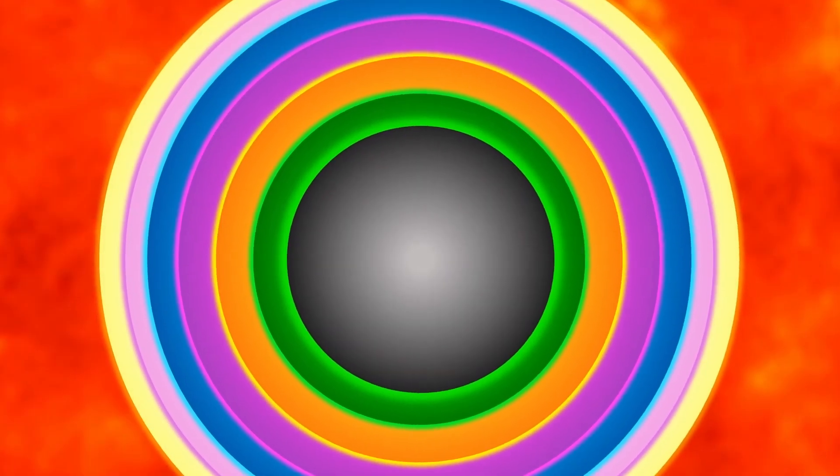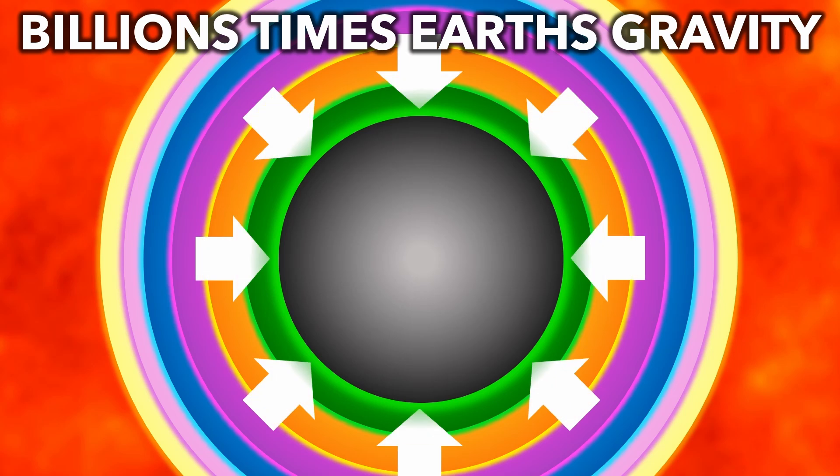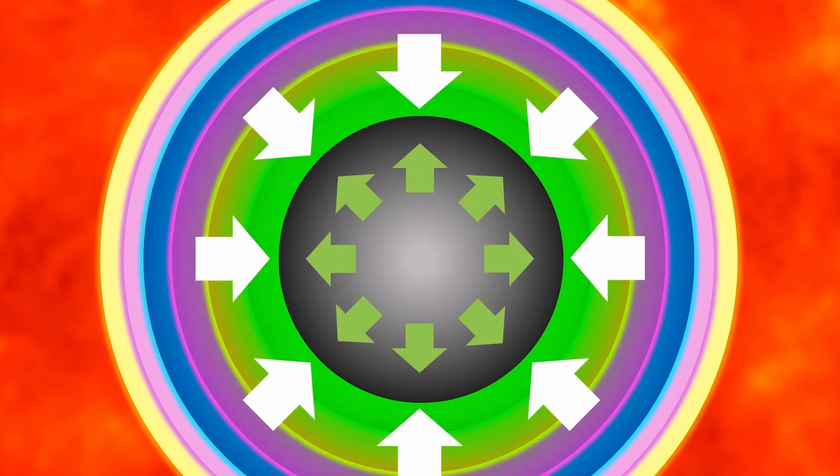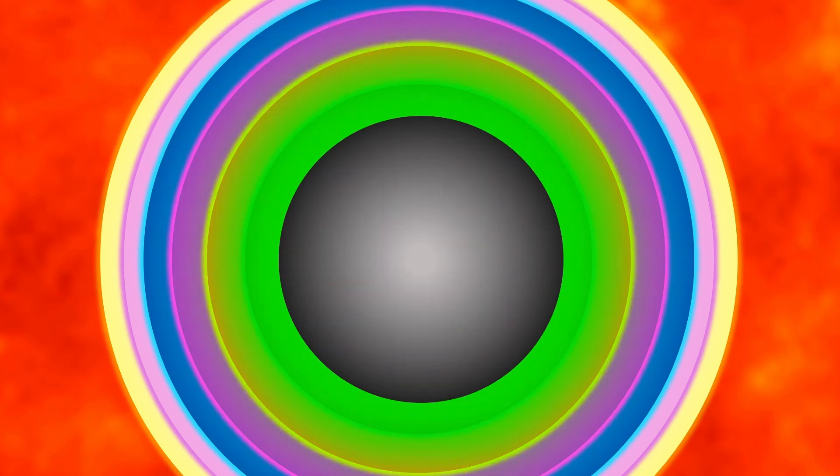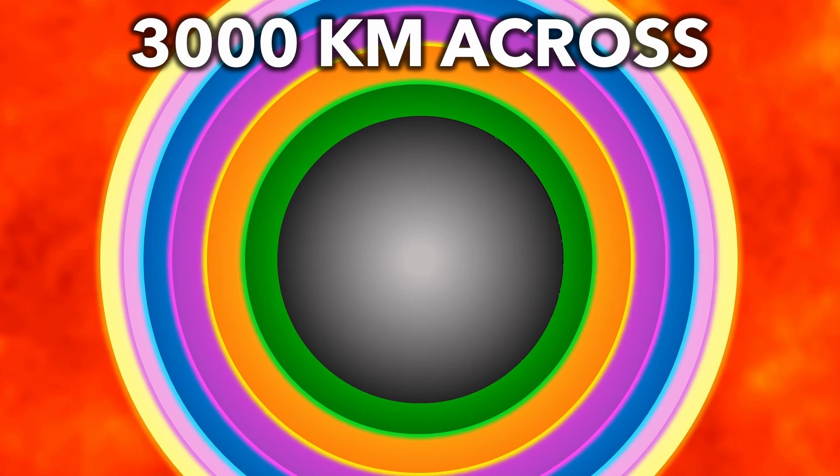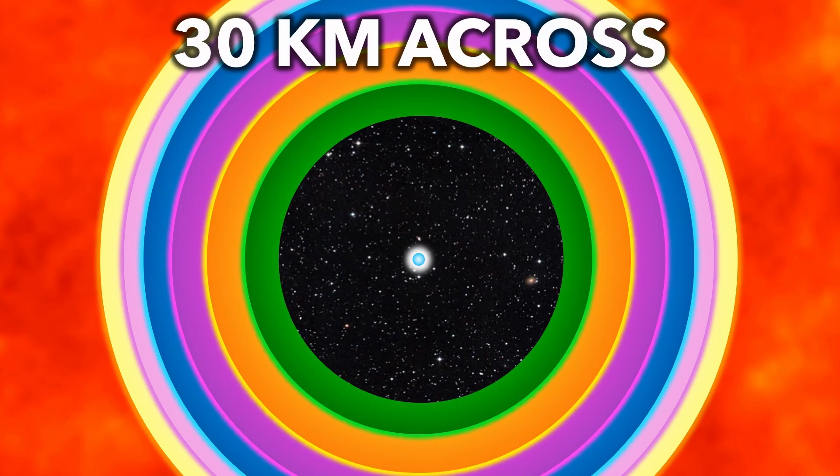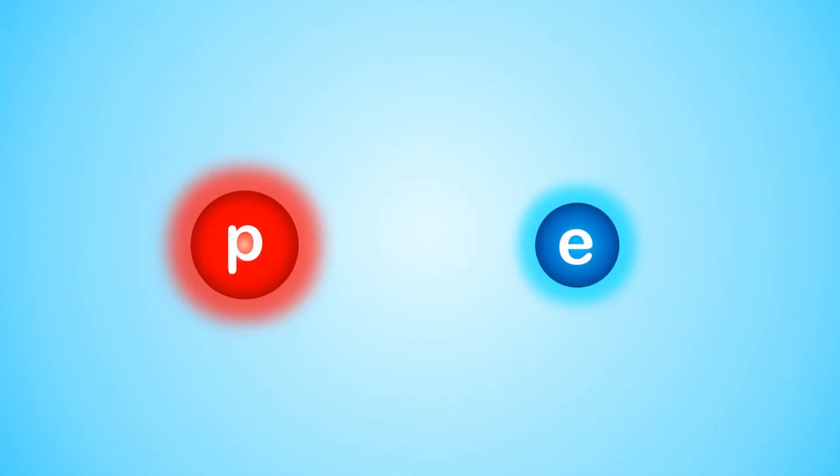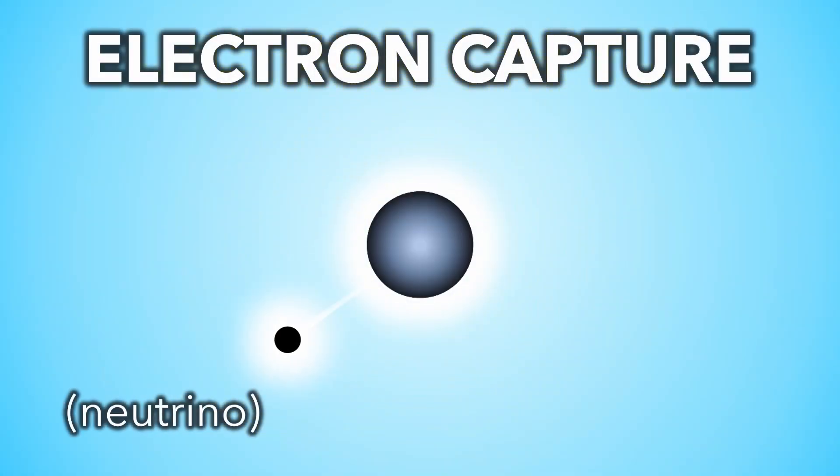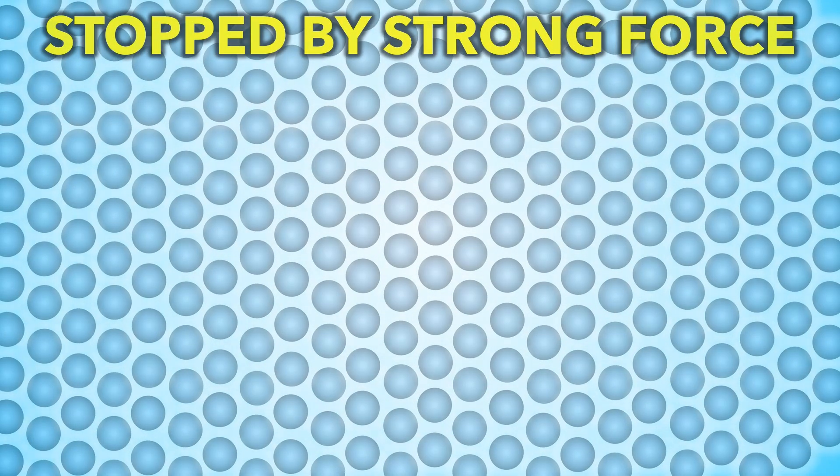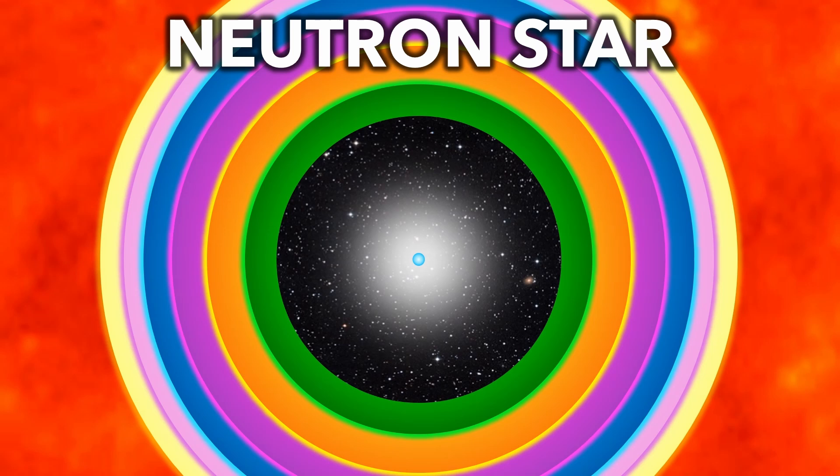When the iron grows to 1.4 times the Sun's mass, gravity is so strong that not even quantum forces can support it. In a split second, the iron ball collapses from the size of the Moon to the size of London. The protons and electrons get so close that they combine into neutrons, also releasing a neutrino. The neutrons compress until stopped by nuclear forces, creating a dense neutron star.